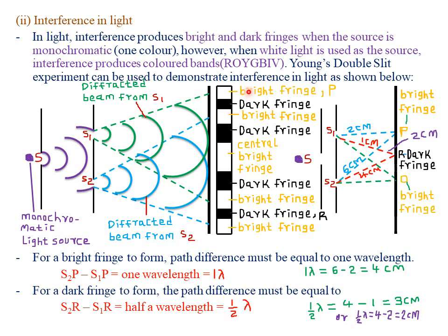At the end, we are going to have formation of alternating bright and dark fringes, just like in sound waves whereby we had formation of loud sound and soft sound. In light, instead of soft sound we have dark fringes, and instead of loud sound we have bright fringes. Bright fringes are always formed when the waves interfere constructively, and dark fringes are formed when the waves interfere destructively.